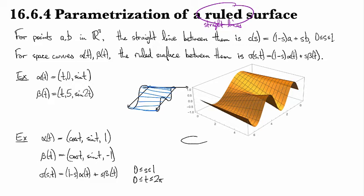Alpha is going to give me this guy and beta is going to give me this guy. Then interpolating with a straight line path is just going to give me this cylinder, this wretched cylinder. I cannot draw today.